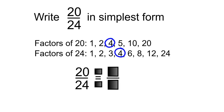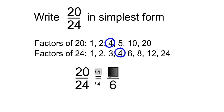Therefore, we'll divide the numerator and the denominator by 4. 24 divided by 4 is equal to 6, and 20 divided by 4 is equal to 5. So 5 over 6 is an equivalent fraction to 20 over 24.